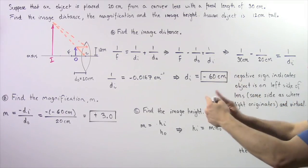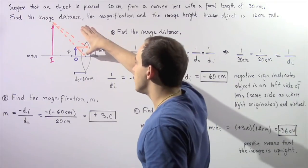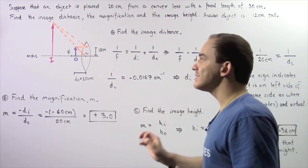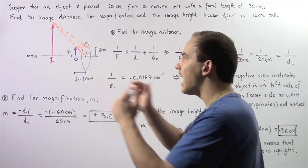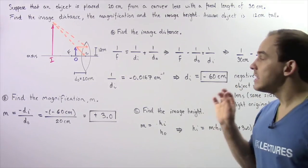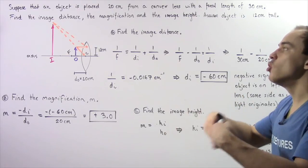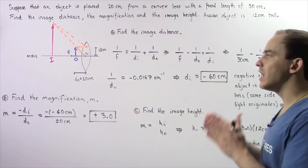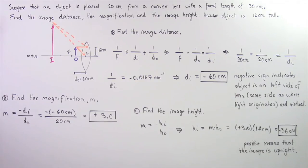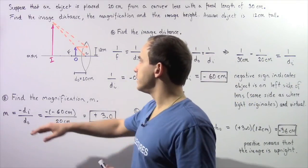So negative 60 cm is the distance from the center of our lens to where our image is found. The negative sign means that our image is a virtual image, which implies the rays of light do not actually pass through our image point. The negative sign also means our image is found on the same side as where the light originates — so because the light originates on the left side, the image will also be found on the left side, and the image is a virtual image.